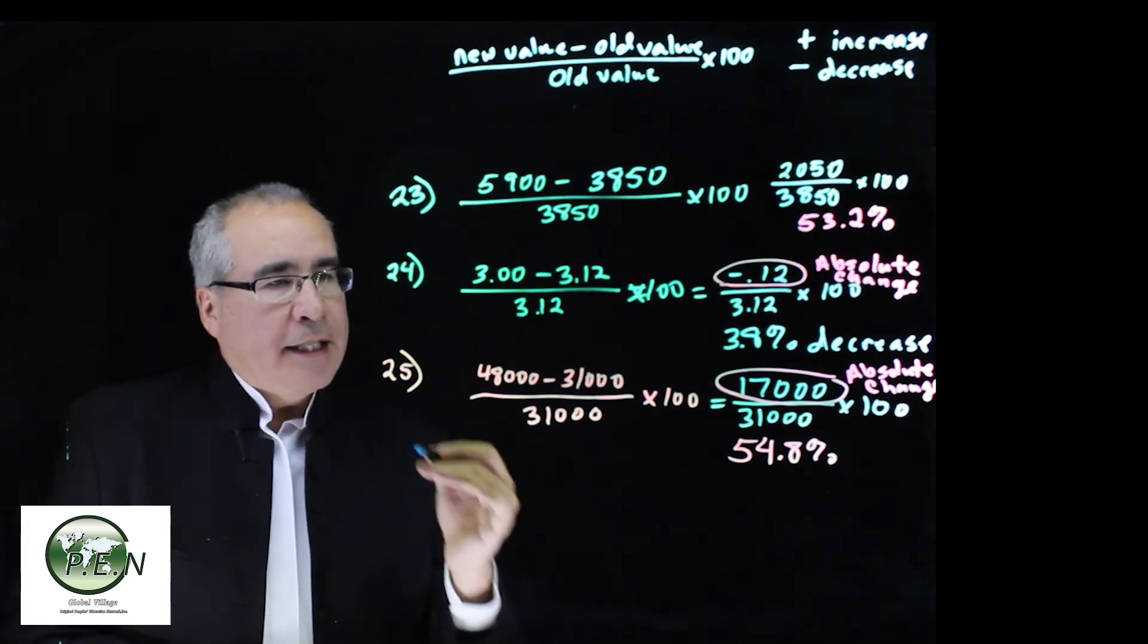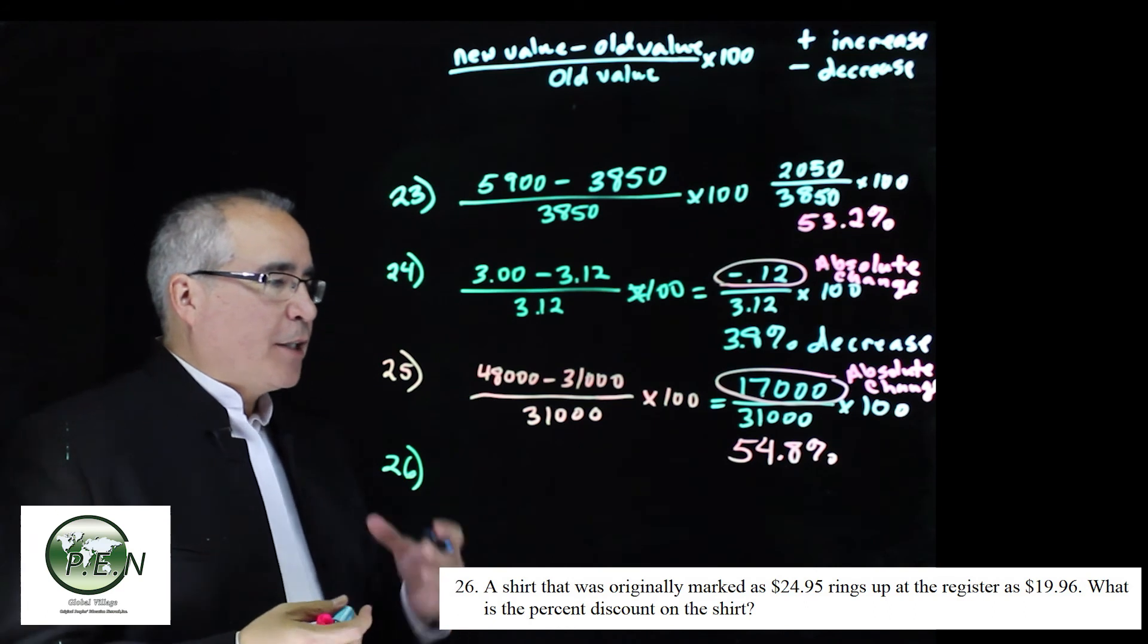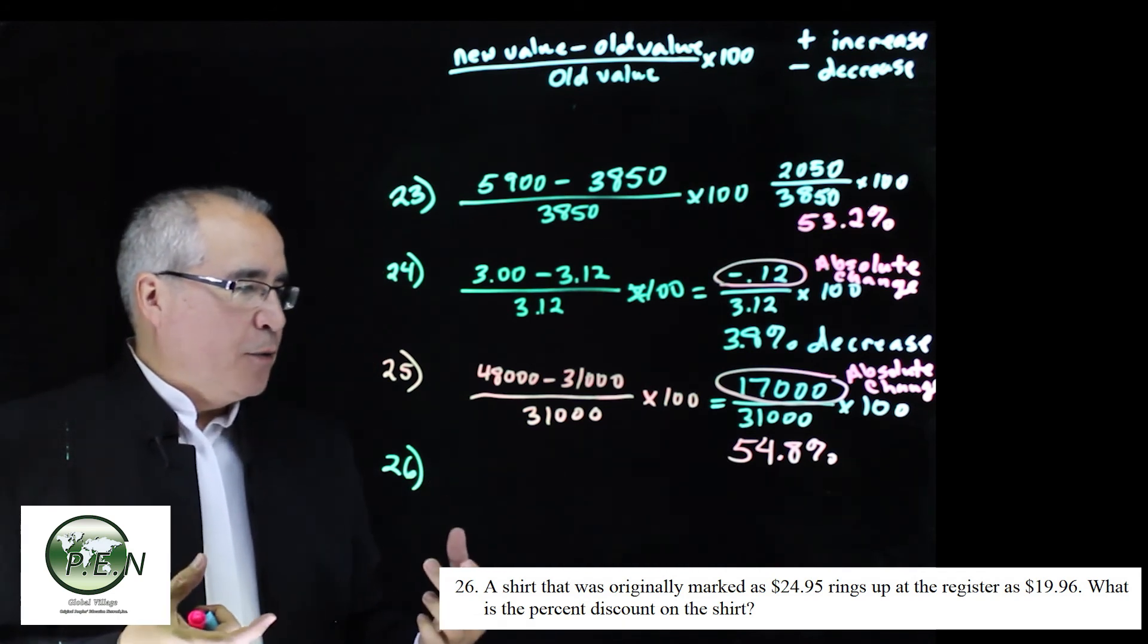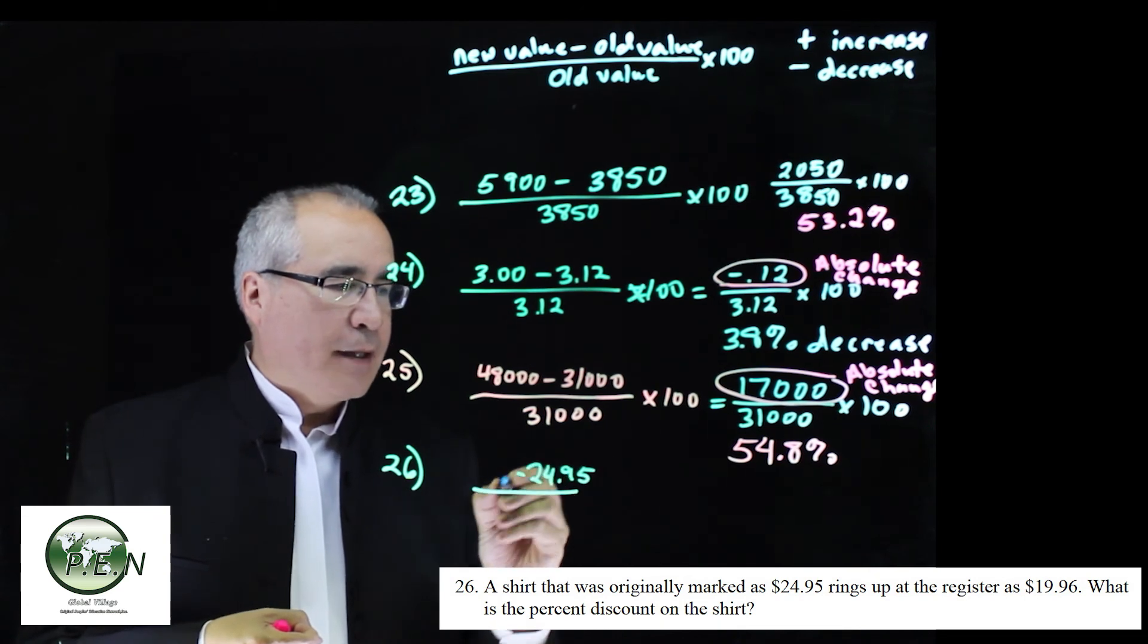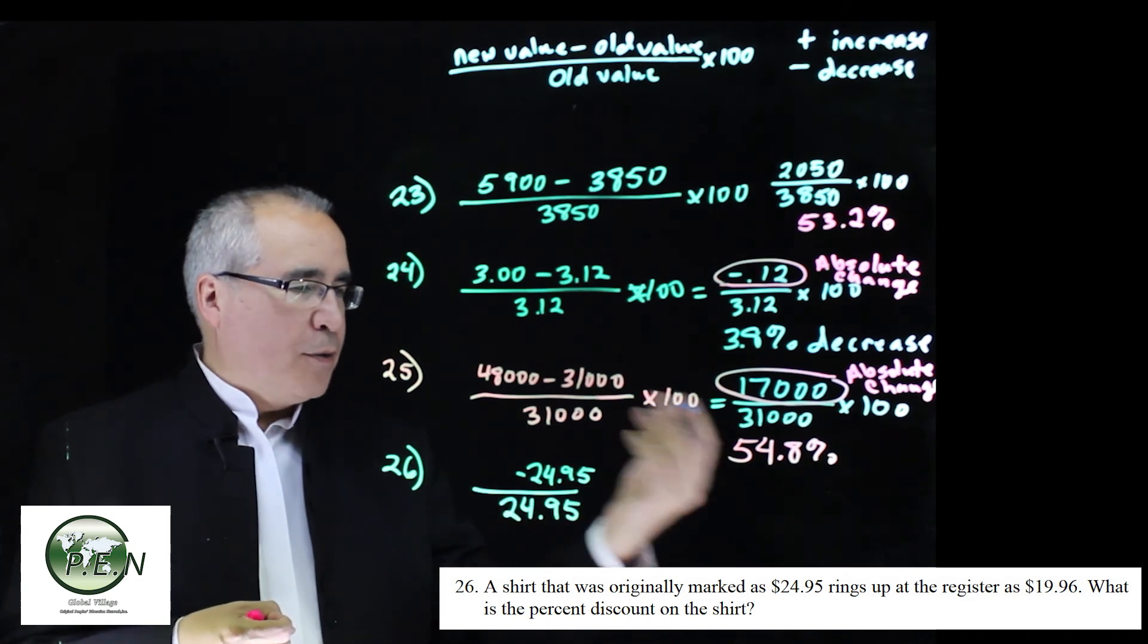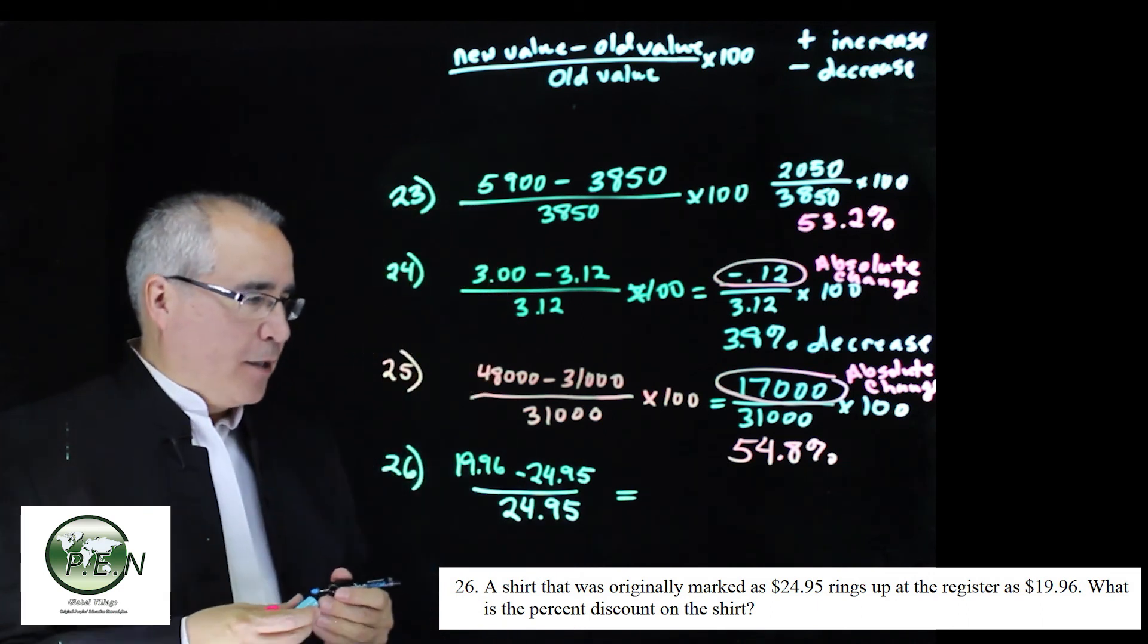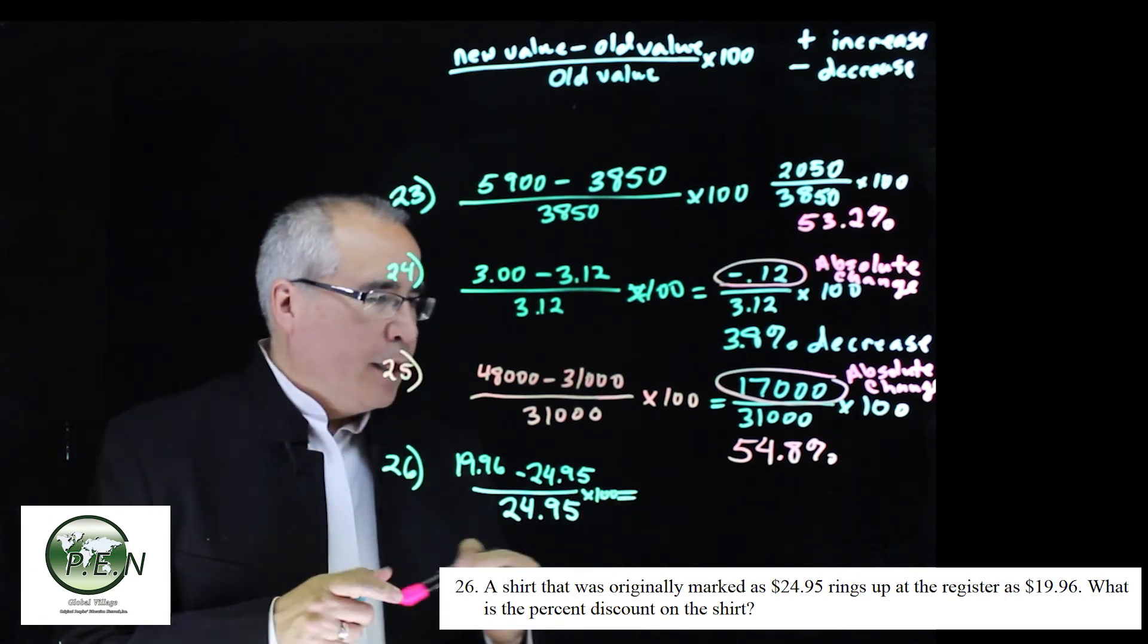One more for us to consider, getting the hang of this now, it'll really help you with that online homework. So we've got a shirt that was originally marked at $24.95, it rings up at the register at $19.95, so we've got an original price and a price that it rings up, so we see our old and new, right? The old was the original price, $24.95, that's the old, old always goes into the basement, and the newer price that it actually rang up at is $19.95. It only wants the percent of the discount, so we can do this calculation. Almost forgot, always multiply by 100.